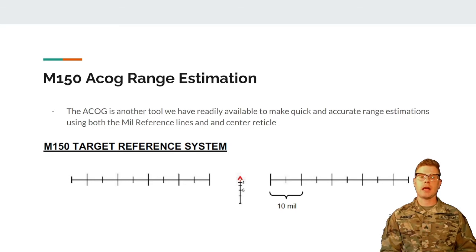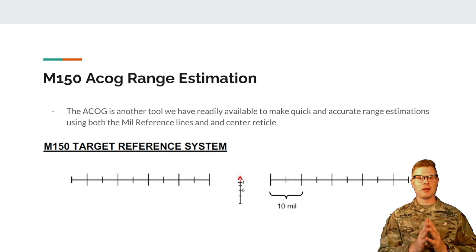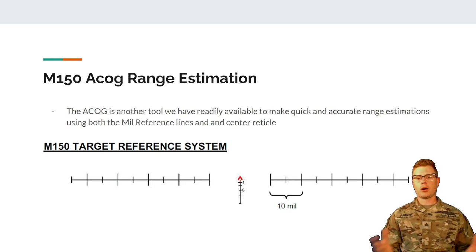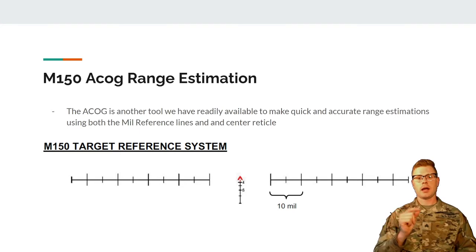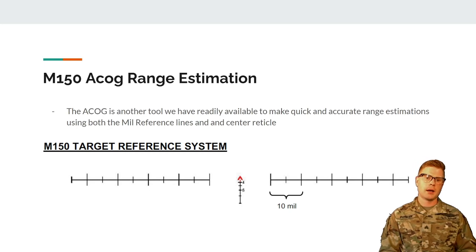We're going to move now to the M150 ACOG for range estimation. The IBAS on the Bradley is probably going to be the most accurate and readily available tool for a mechanized infantry company to measure distance, but we don't always have the Bradleys with us. For dismounts, you've got your M150 and your M22 — two extremely useful pieces of equipment to measure and estimate range. The ACOG is another tool readily available to make quick and accurate range estimations using both mil reference lines and the center reticle.